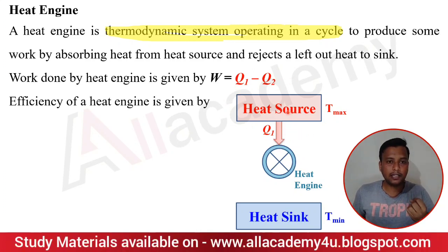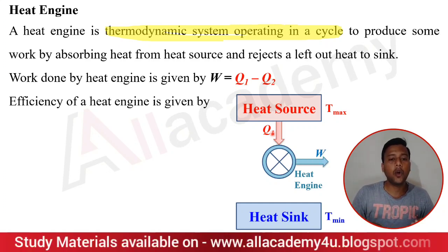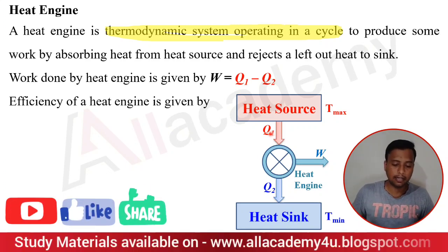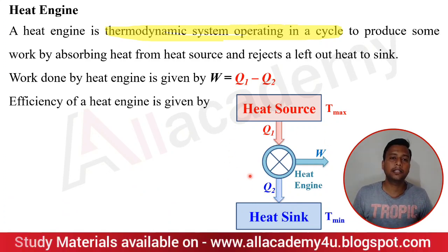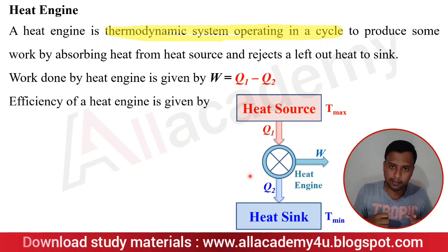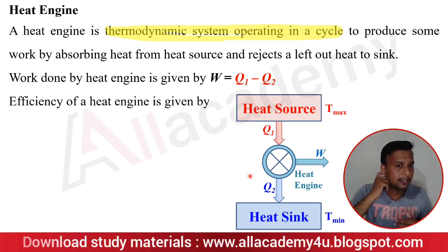The heat engine takes some quantity of heat from the heat reservoir — that heat transfer from heat source to heat engine is Q1. It then performs some work W. After producing some quantity of work, there will be some leftover heat that is sent to the low-temperature reservoir — that heat transfer to the heat sink is Q2. So the heat engine absorbs Q1 from the heat source, produces work W, and rejects Q2 to the heat sink.